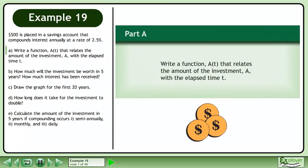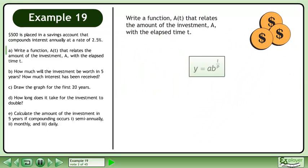$500 is placed in a savings account that compounds interest annually at a rate of 2.5%. In Part A, write a function A that relates the amount of the investment A with the elapsed time t. We can use the exponential form y equals a times b raised to the power of t over p to answer this question.